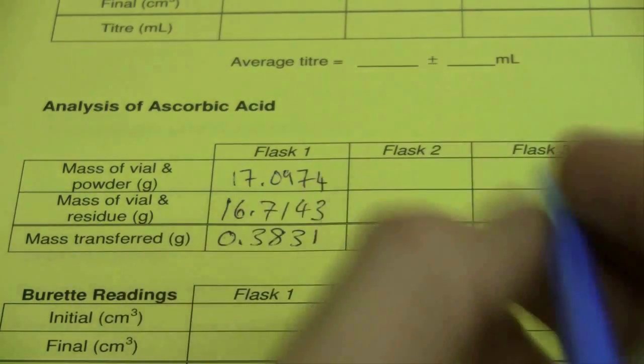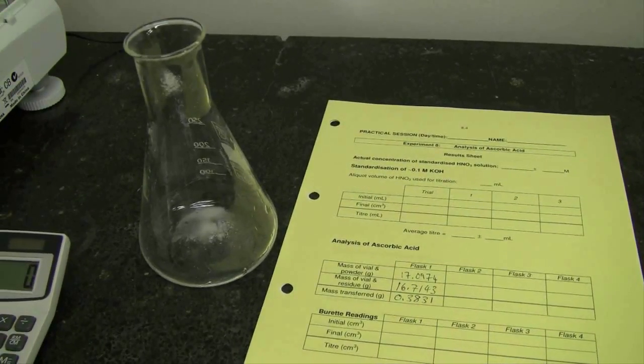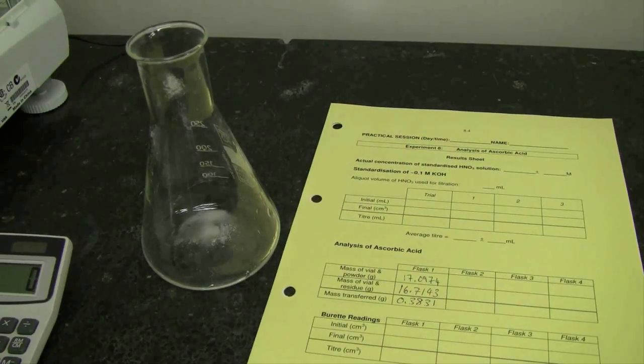Repeat this procedure several times so that you have four accurately known masses of ascorbic acid in four separate conical flasks. Make sure you know which mass is in which conical flask.